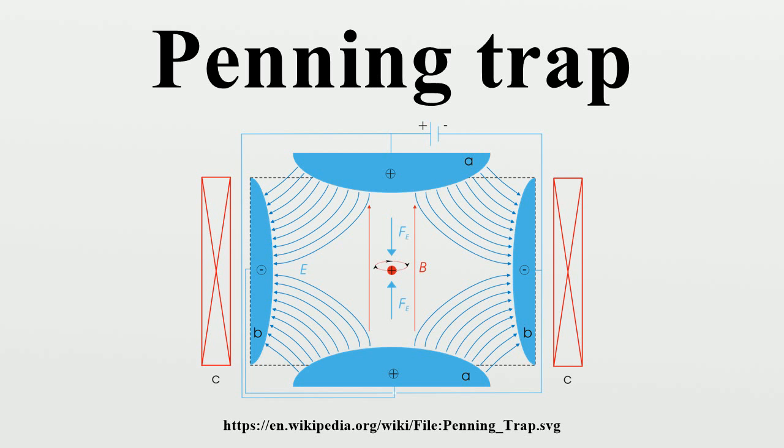Fourier transform mass spectrometry: Fourier transform ion-cyclotron resonance mass spectrometry is a type of mass spectrometry used for determining the mass-to-charge ratio of ions based on the cyclotron frequency of the ions in a fixed magnetic field. The ions are trapped in a penning trap where they are excited to a larger cyclotron radius by an oscillating electric field perpendicular to the magnetic field.